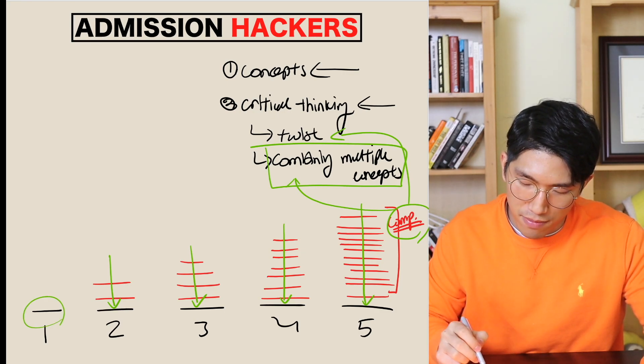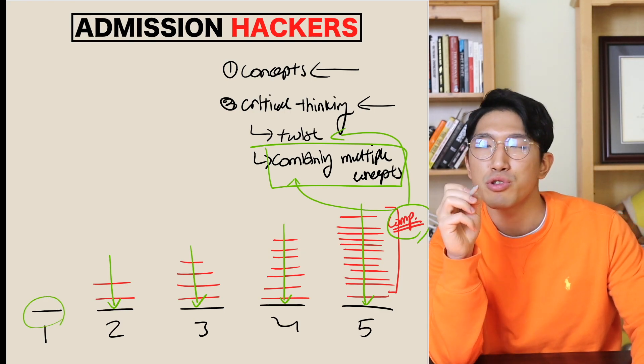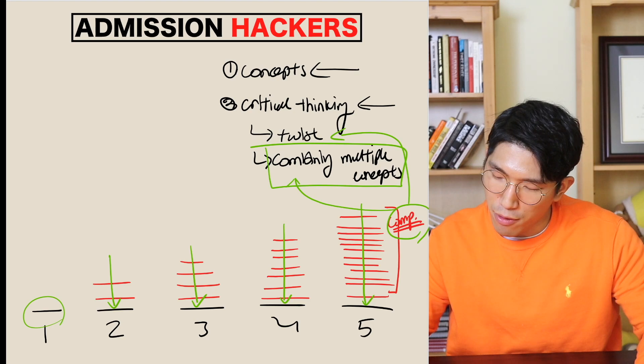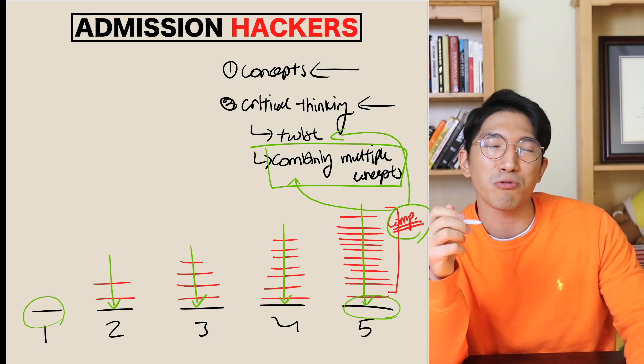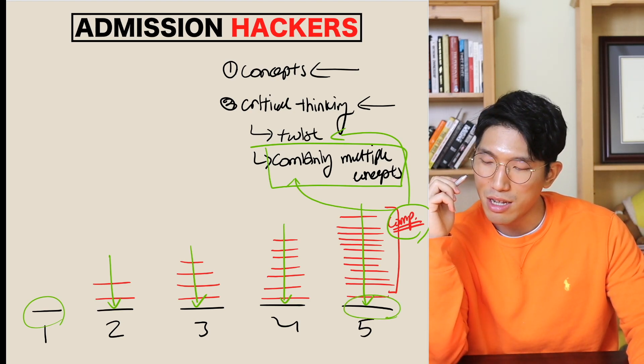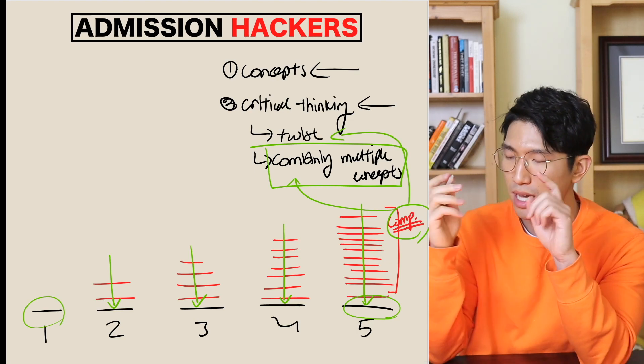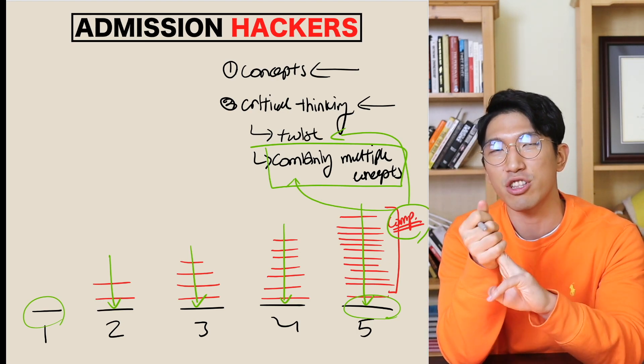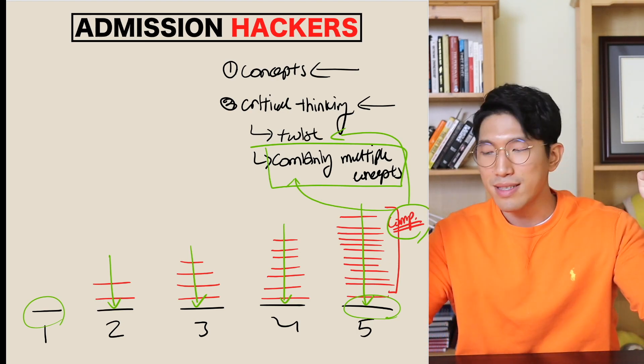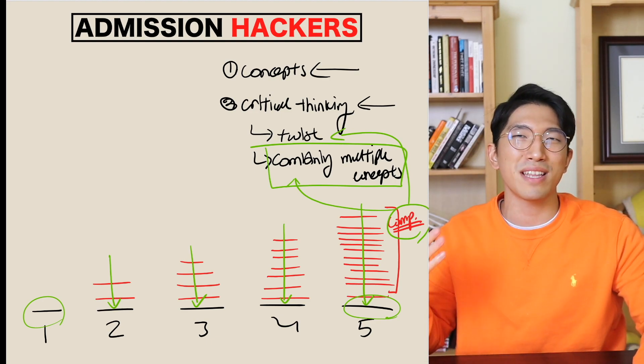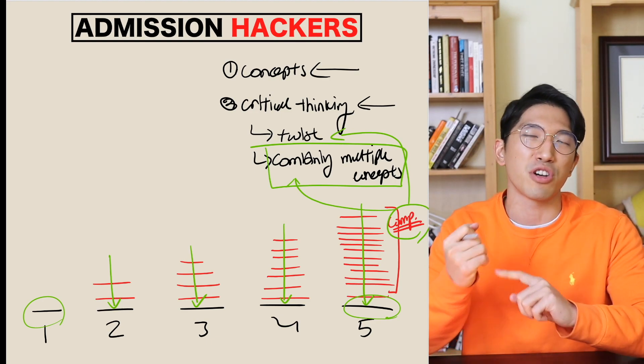For example, difficulty one question requires you to use just one concept, but let's say difficulty five question is gonna require you to use multiple concepts. Maybe it's gonna require, it's gonna be a question with a mix of exponents, circles, trigonometry, and volume, or things like that. As questions get more complicated, you're gonna need more than one concept to solve that exact question.